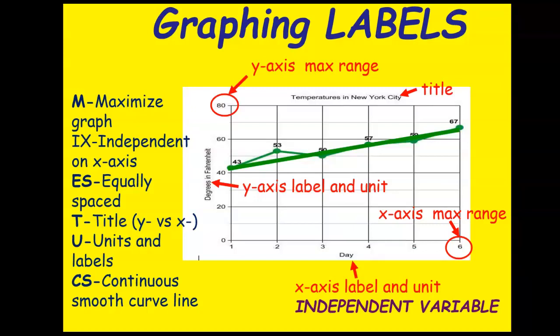The mnemonic is MIX TUX, where M stands for maximizing your graph. What that means is you need to make sure that your entire graph is used. Here you can see that we use the entire graph when we plotted our points. IX stands for the independent on the x-axis. In this case, it's time. Then ES stands for equally spaced, meaning that every interval is the same value. In this case, these are going by ones.